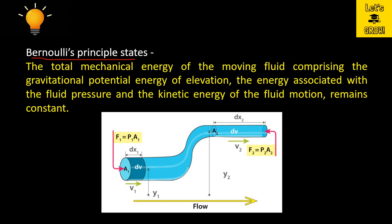So the water has three types of energy: gravitational potential energy due to elevation, energy related to fluid pressure, and kinetic energy due to the motion of the fluid. The sum of these three energies remains constant, because as per the law of conservation of energy, energy cannot be created nor destroyed — it can only transform from one form to another. So the total energy will remain constant.